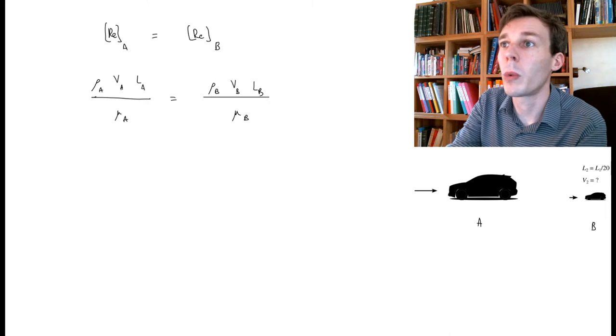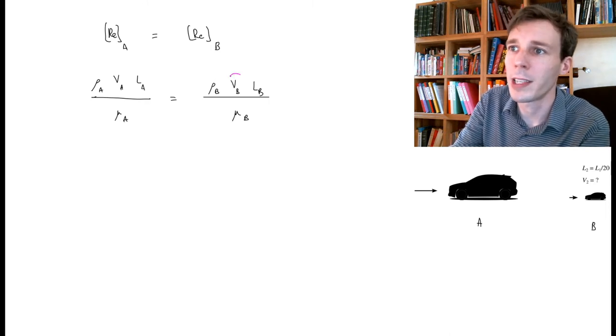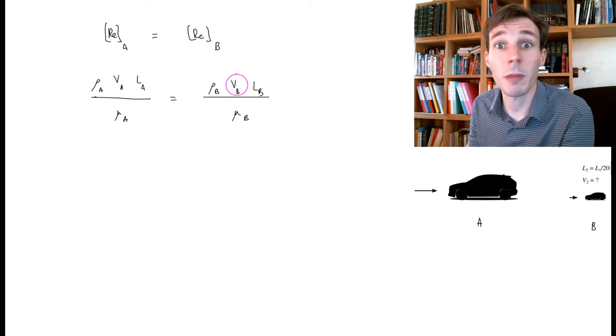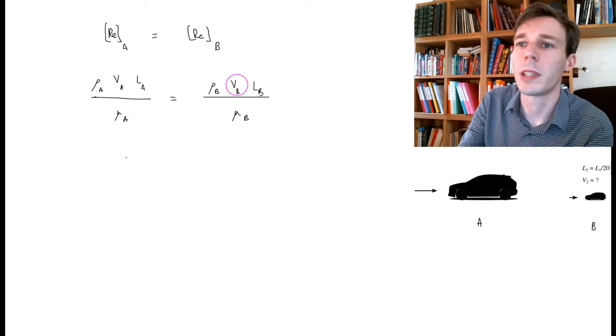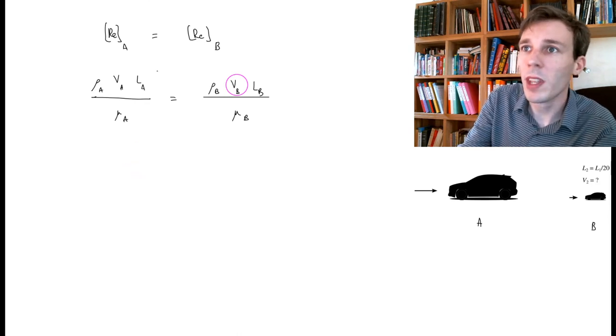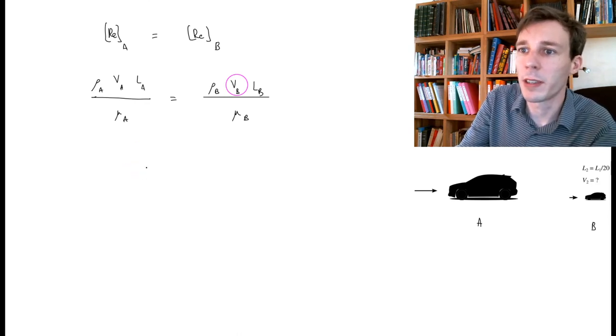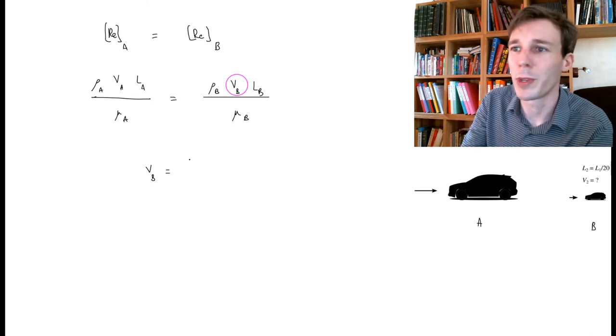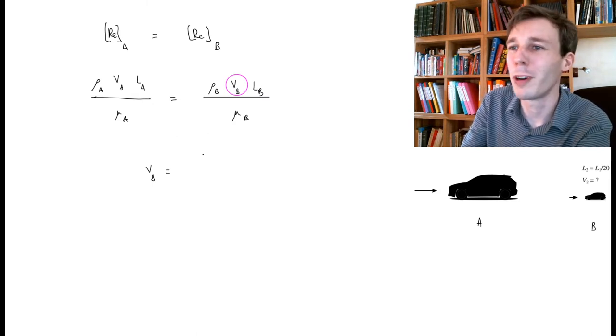And in here, what we want to calculate, what we want to isolate, is VB, the velocity of the model car. So the question is, what is VB in this case? This is not a difficult mathematical problem. We take VB and write it by itself on the left side, and then we have to rearrange and re-sort out all the different terms.